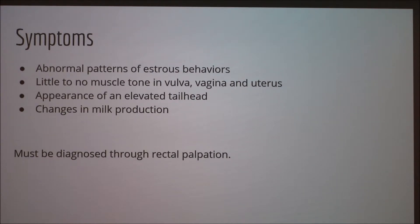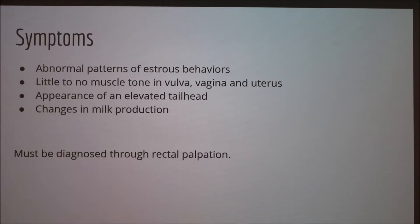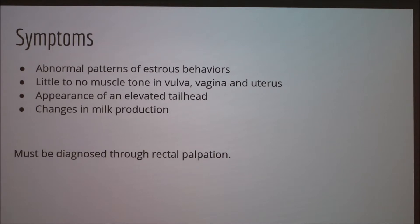While you are looking for symptoms, here are a few common ones that you may observe. Cows with ovarian cysts have abnormal patterns of estrus behavior, and in many cases the absence of estrus, or anestrus, is a very common symptom. The physical appearance of cows with ovarian cysts is often not very noticeable and they'll look just like their neighbor. However, the following are general symptoms that cows with ovarian cysts may have.